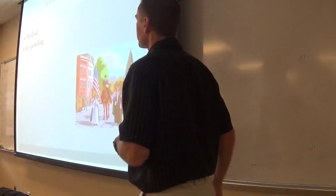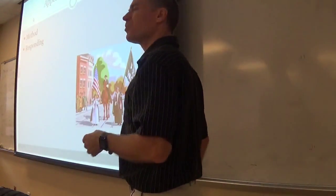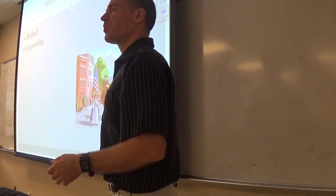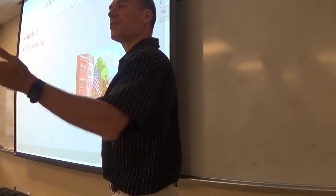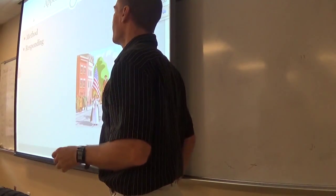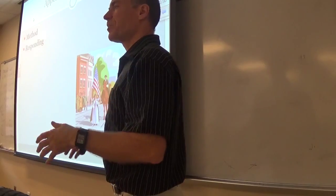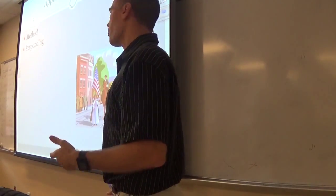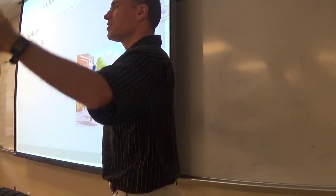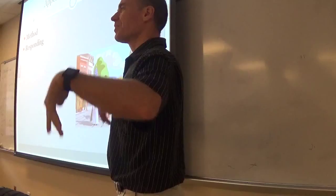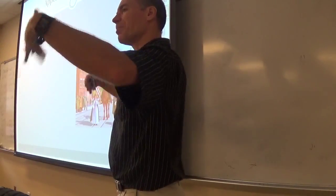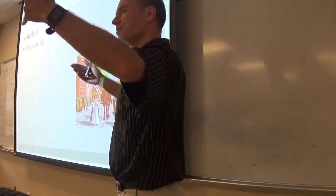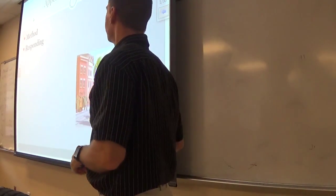We also saw appeal to rules — the view opposed to consequentialism, that morality is based on rules. That method is also pretty straightforward. You just need to get a rule, put it in place, apply it to the thing, and you have your argument — done.